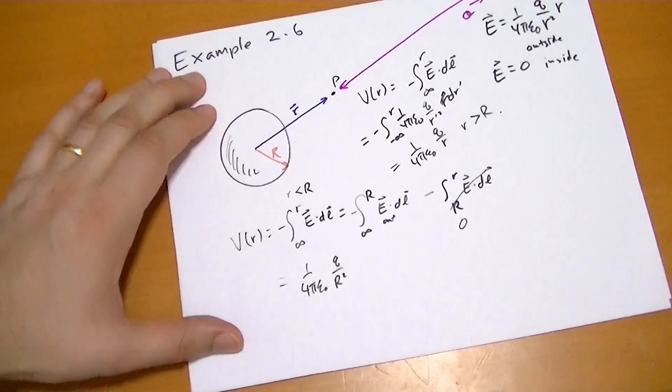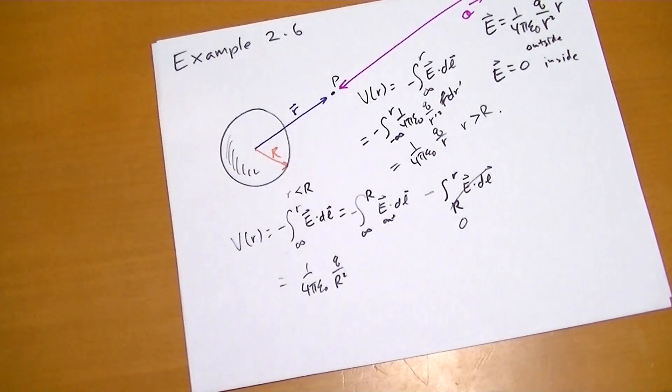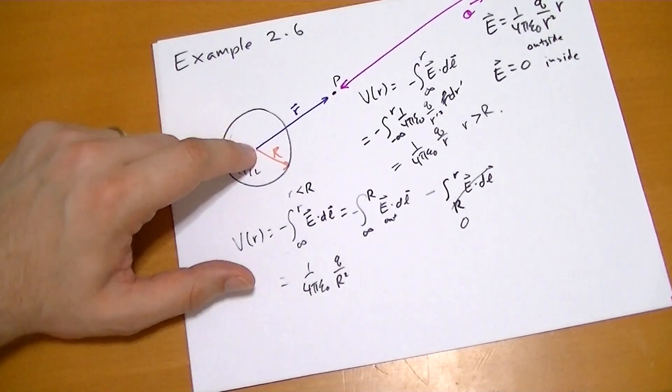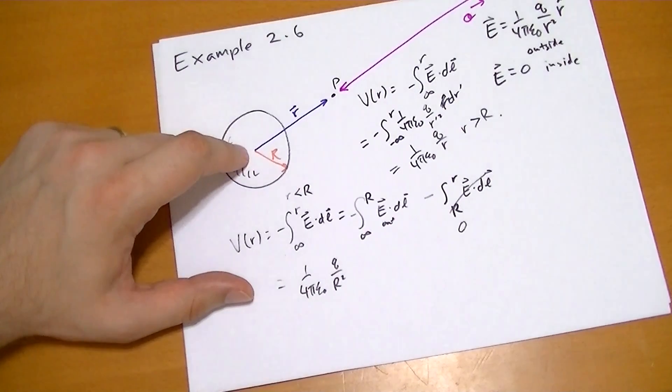So we've basically solved the potential for every point in space around the sphere. You might be a little bit surprised that the potential inside the sphere is not zero, even though the field is.